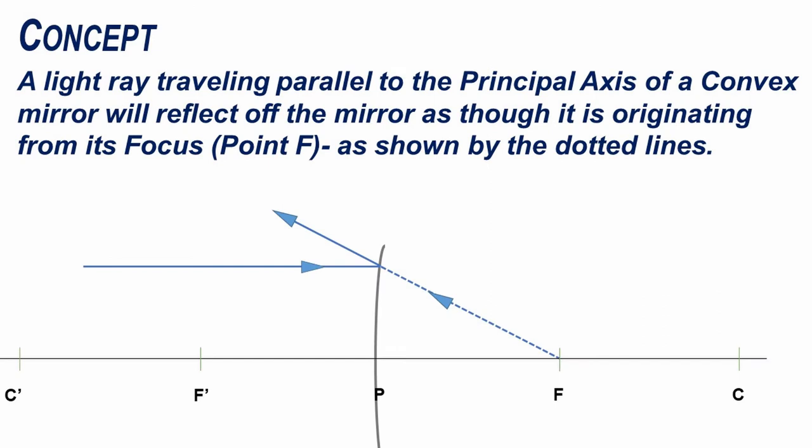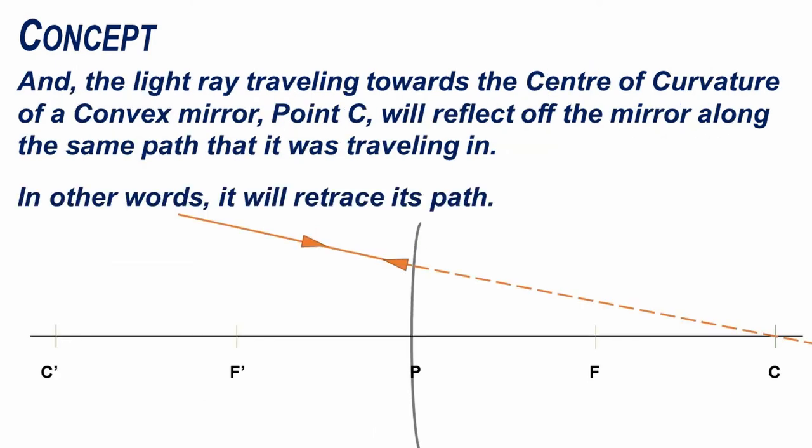A light ray travelling parallel to the principal axis of a convex mirror will reflect off the mirror as though it is originating from its focus point F, shown by the dotted lines. A light ray travelling towards the centre of curvature of a convex mirror, point C, will reflect off the mirror along the same path it was travelling in — in other words, it will retrace its path.